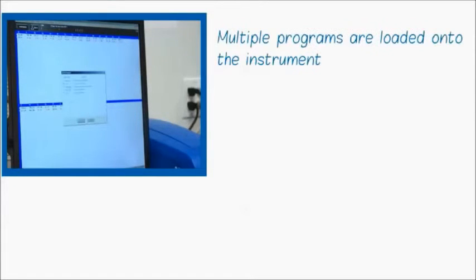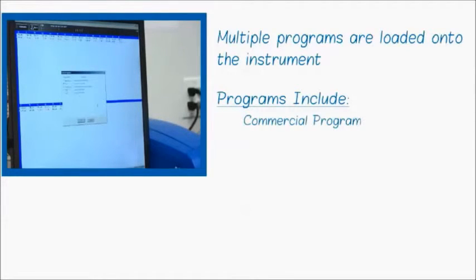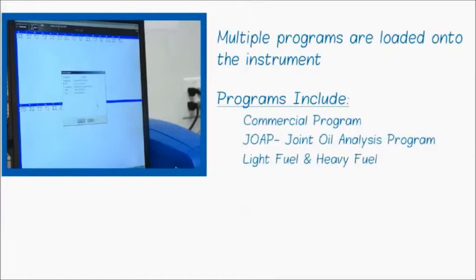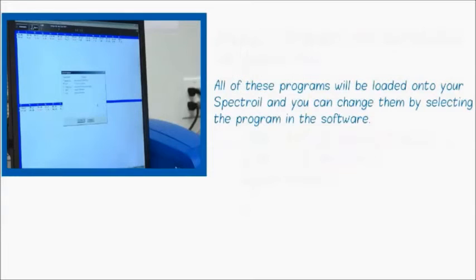If I go to File, Open, I can see all of the programs which are loaded onto my instrument. A program might be the commercial program, the JOPE program, for doing light fuel or heavy fuel, or for doing glycol and water. All of those programs will be loaded onto your Spectral, and you can change them just by selecting the program in the software.